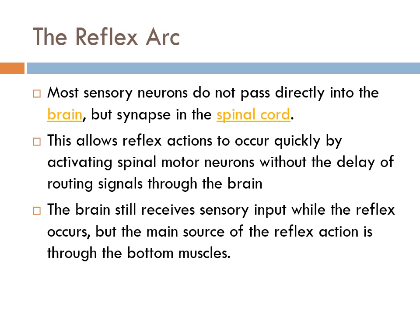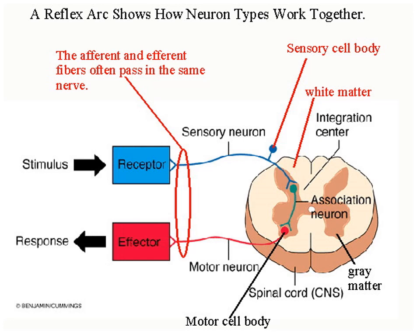By having these reflex arcs make the determination in the spinal cord, we're saving a lot of time, and typically that's beneficial — especially when you put your hand on something hot and pull it away, because the longer you leave it there, the more pain you'll be in and the more likely you are to suffer a burn. The brain still receives sensory input from a reflex arc, but the motor response to the effectors takes place through the motor neurons coming out of the spinal cord. So you have a receptor detecting something, sending information along the sensory neuron to the interneuron, which interprets the signal and sends it down the motor neuron to the effector — which is typically a muscle.